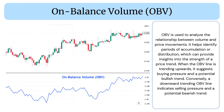OBV is used to analyze the relationship between volume and price movements. It helps identify periods of accumulation or distribution, which can provide insights into the strength of a price trend. When the OBV line is trending upwards, it suggests buying pressure and a potential bullish trend. Conversely, a downward trending OBV line indicates selling pressure and a potential bearish trend.